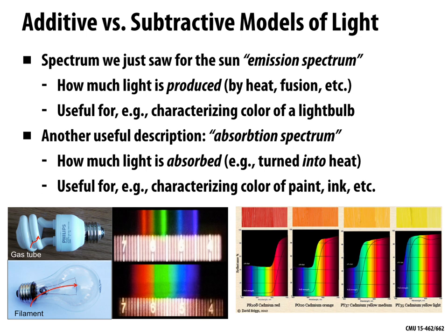This spectrum is called an emission spectrum — it tells us, for each frequency of light, how much light is produced by a given source, whether by heat, fusion in stars, or whatever the source. An emission spectrum is really useful for certain tasks; for instance, if we want to describe the color of a particular light bulb and characterize what kind of illumination it's giving off, we might show an emission spectrum.